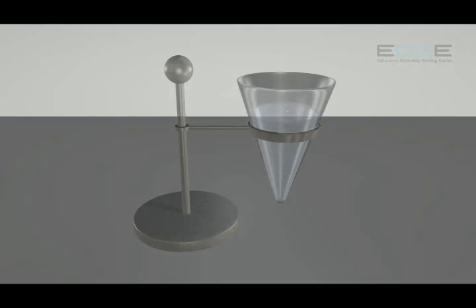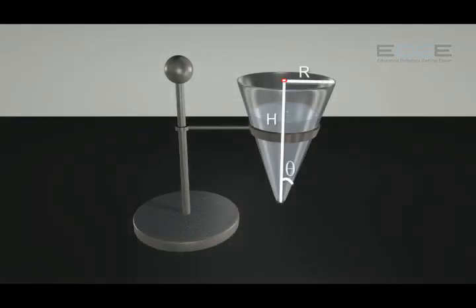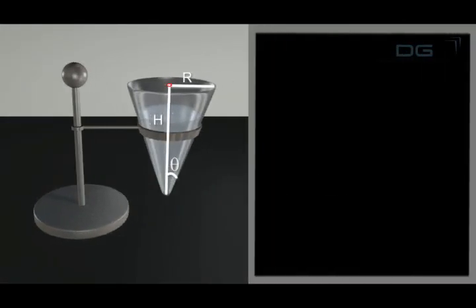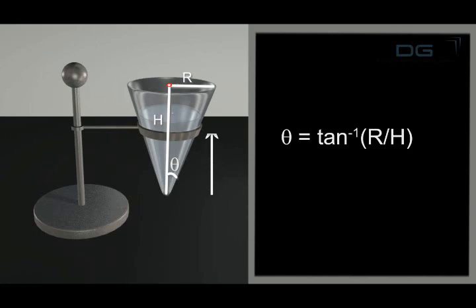Now let the semi-vertical angle of the cone be theta. Then theta equals tan inverse of R upon H. Now let the height of the liquid at time t be h from the base and let the radius at this distance be r.